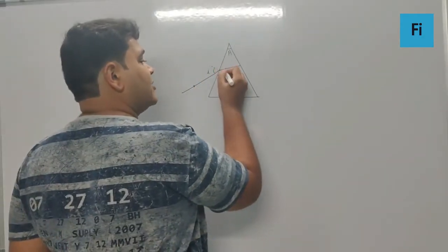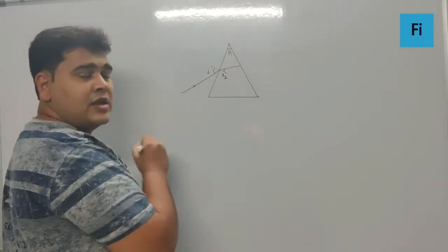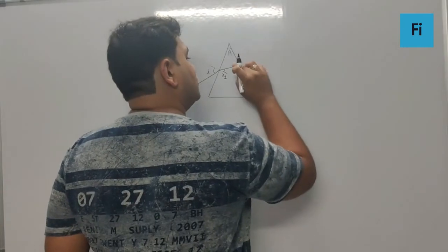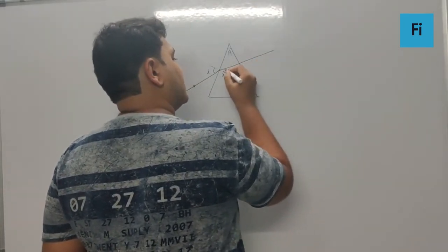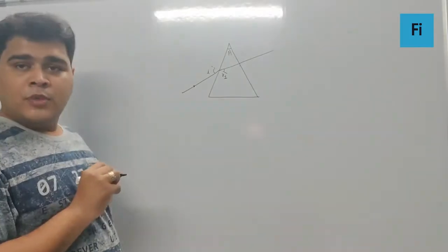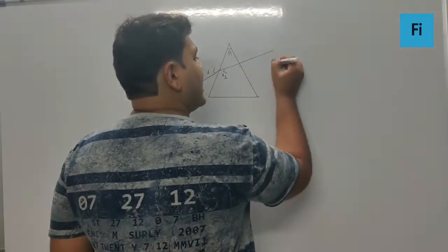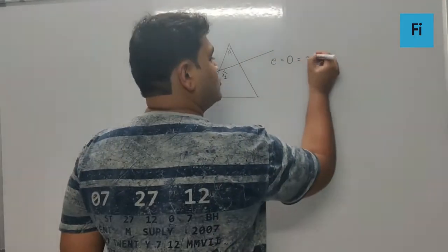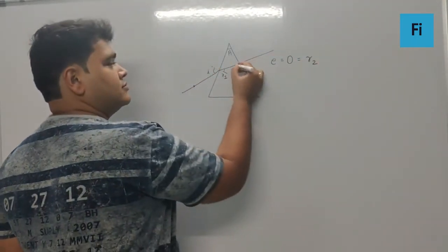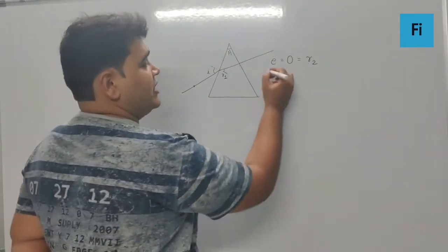And here the light goes normally, basically that is what they mean, which means the angle of emergence is zero and that is equivalent to r₂. Correct. And now a very well-known fact...